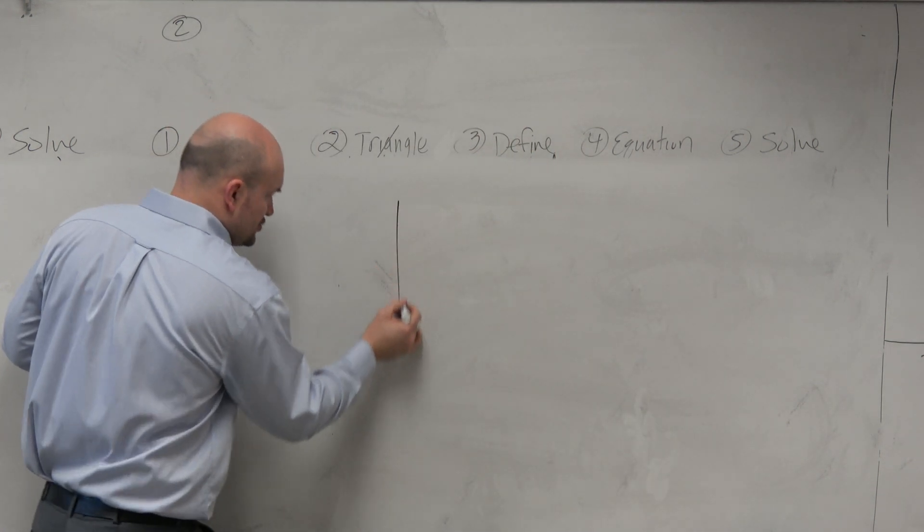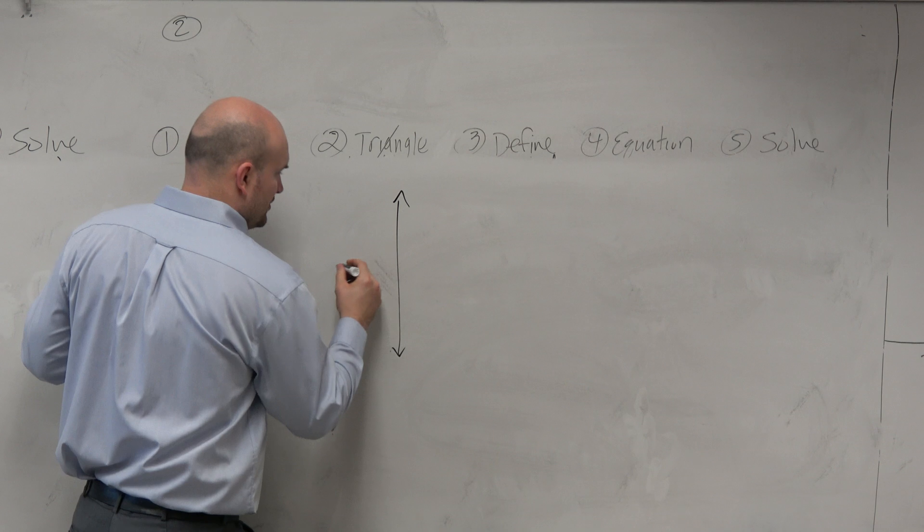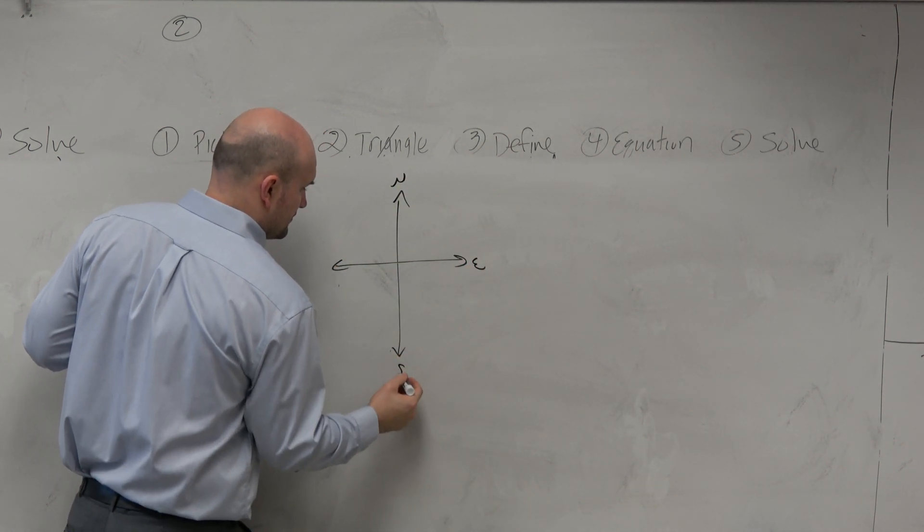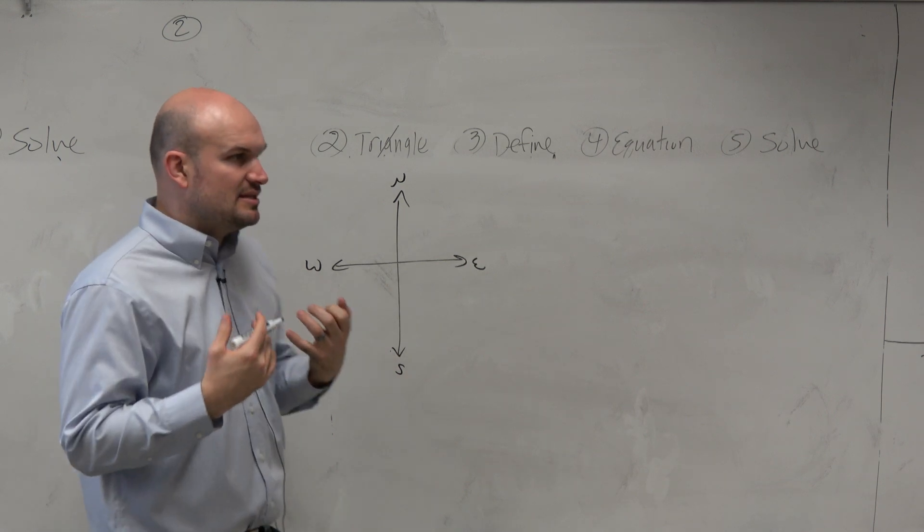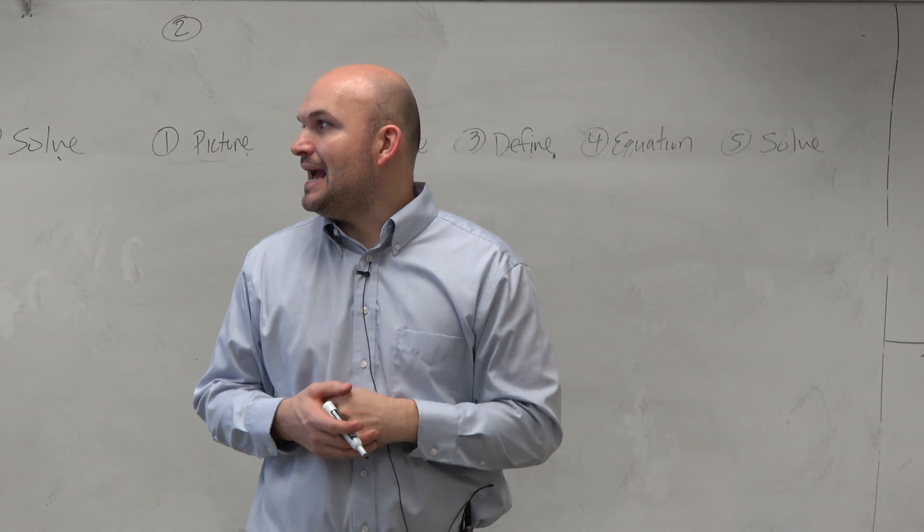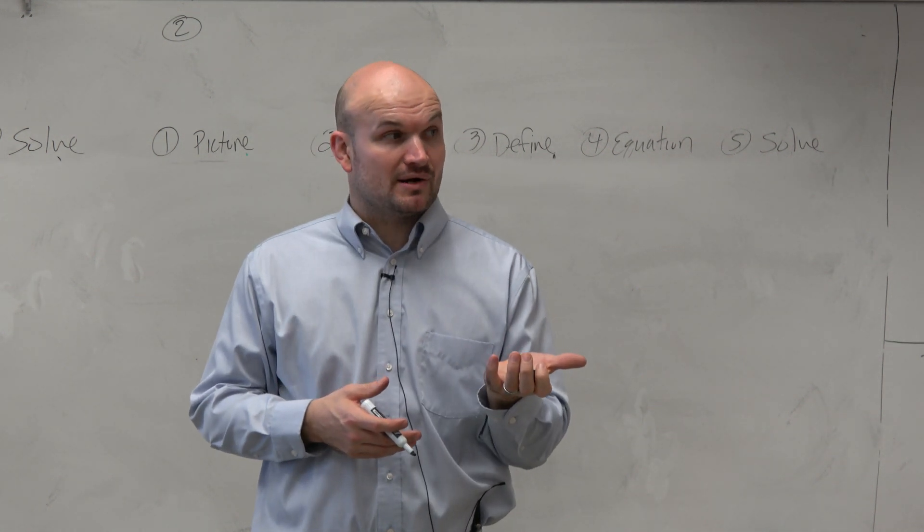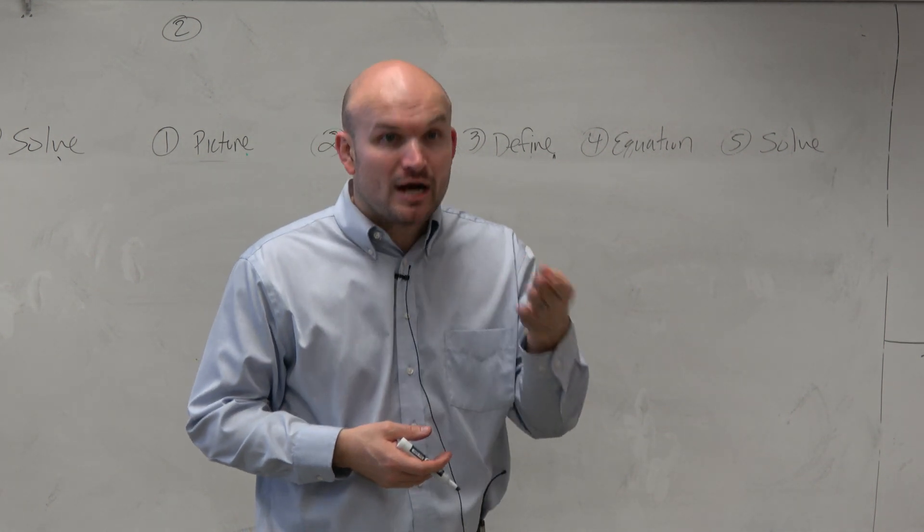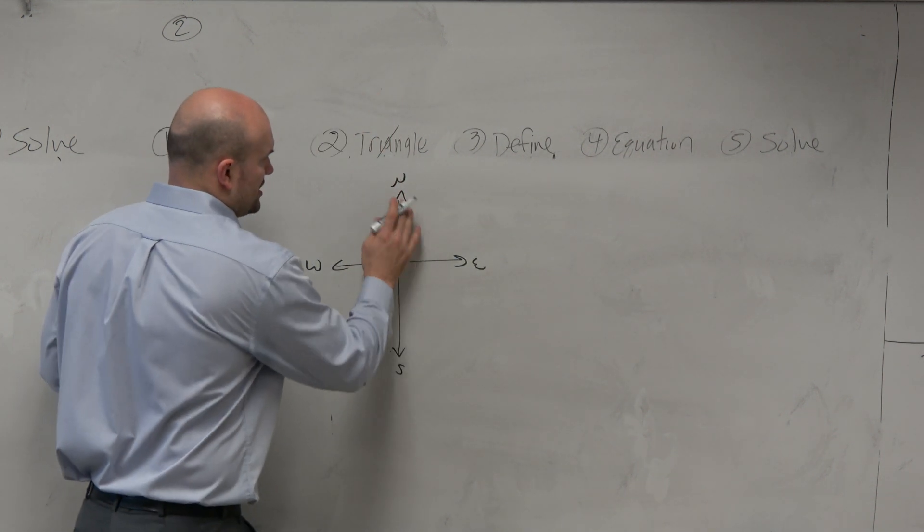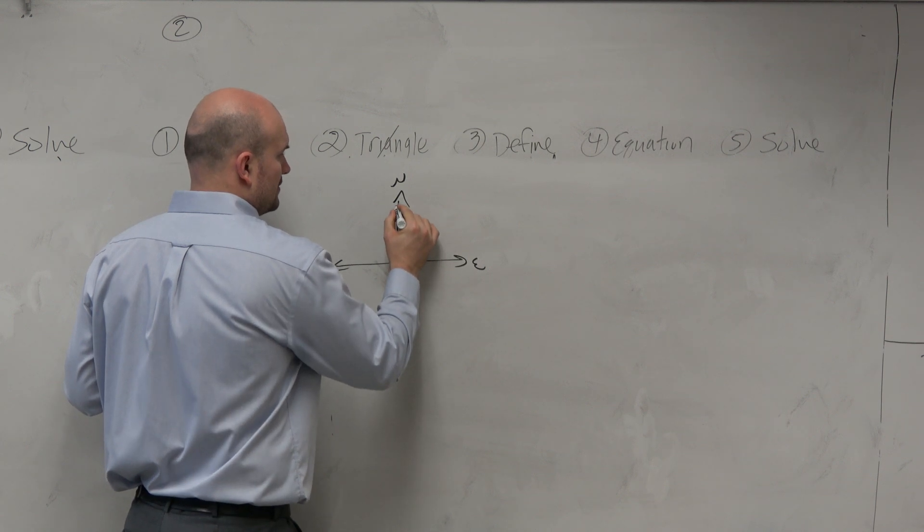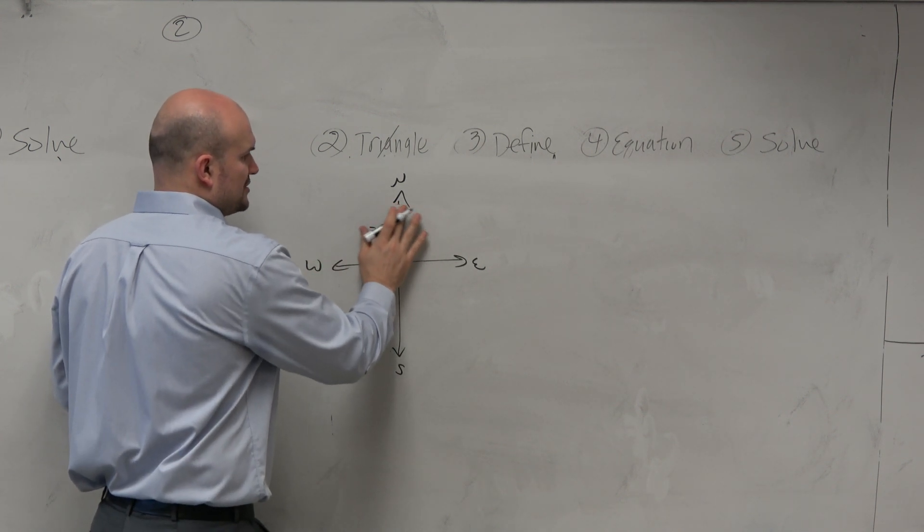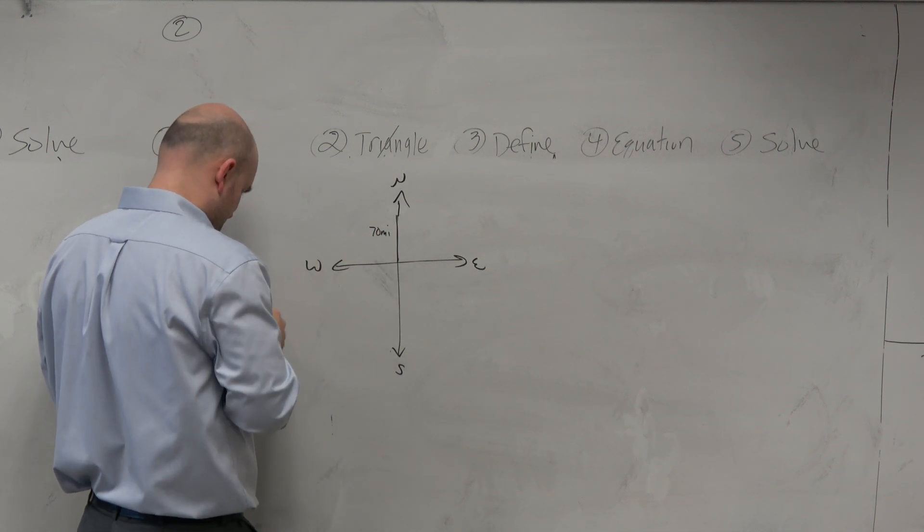So the first thing I'm going to do is draw my northeast southwest. Now, it says that the boat traveled due north. That's relatively easy. That's just straight up north, right? And it traveled there going 35 miles per hour. I'll do it in a different color so it's easy to recognize.